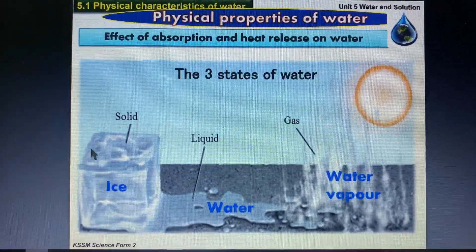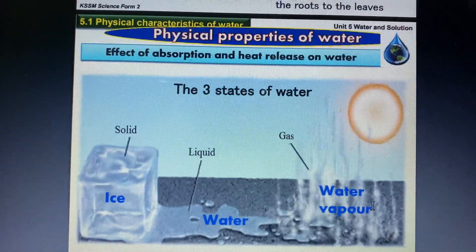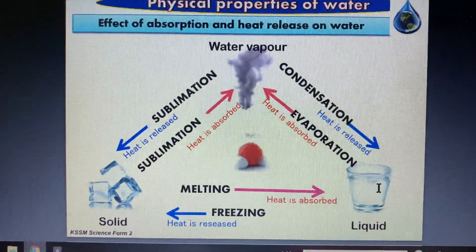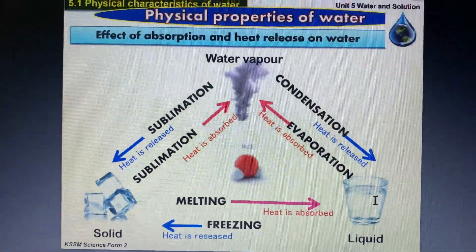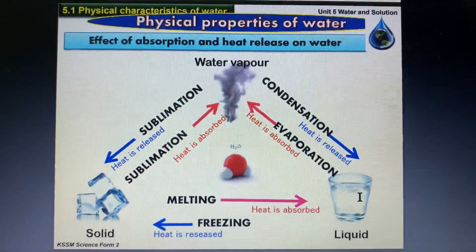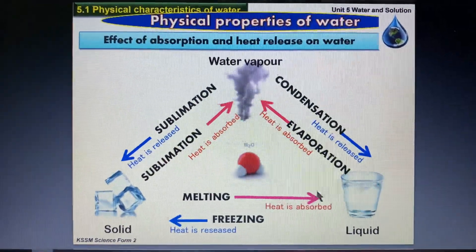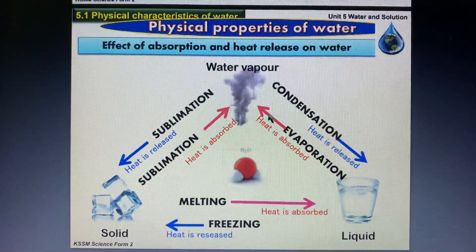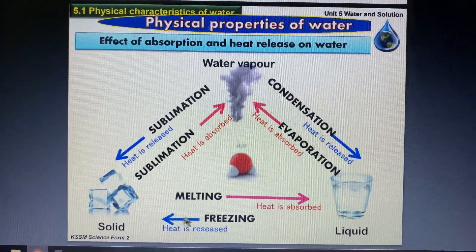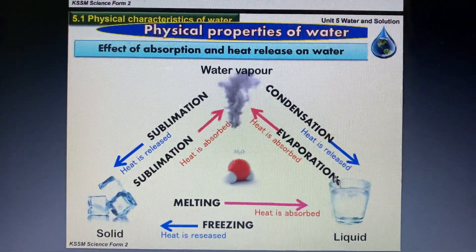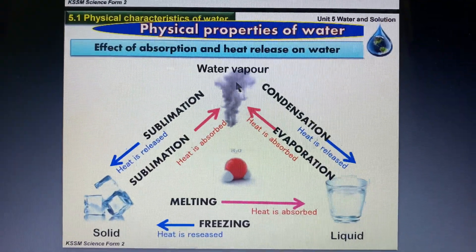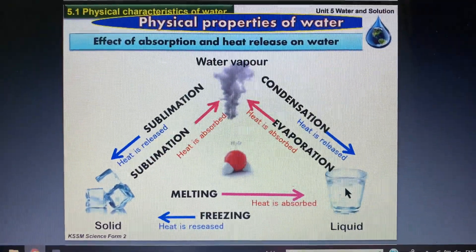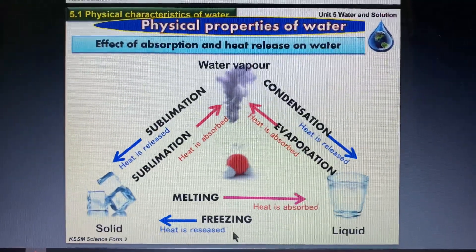Next, the three states of water: solid, liquid, and vapor. When water molecules absorb heat, they go up the heating curve. The ice will melt to become liquid — that is melting. The liquid will then form water vapor gas — that is evaporation or boiling. Solid to liquid is melting, liquid to gas is evaporation or boiling, and gas directly to solid is sublimation.